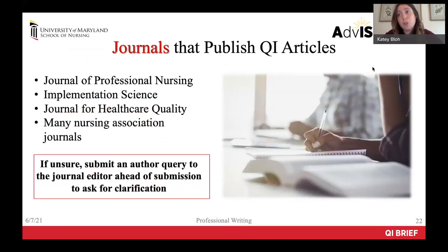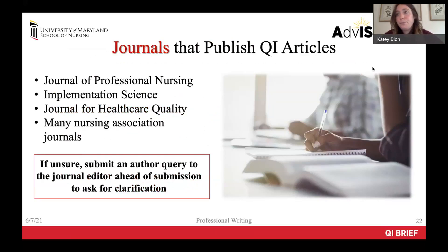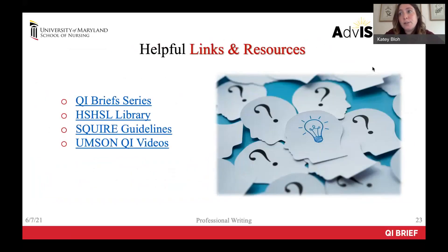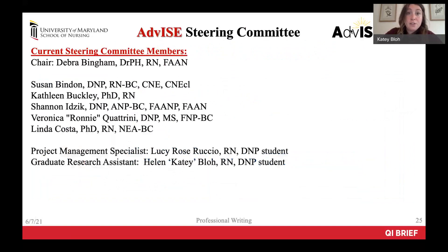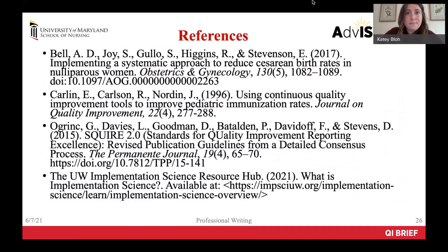Here's a brief list of journals that regularly publish quality improvement articles. You've worked hard on this project — submit it for publication — but know that not all journals regularly publish QI articles, though this is changing. If you're unsure, author queries can be very helpful ahead of article submission. Here are links to some helpful resources, including the rest of the QI brief series, the health sciences and human services library where you can access the included articles, and a full explanation of the SQUIRE guidelines. If you have any questions or comments, please contact Dr. Bingham. Thank you.